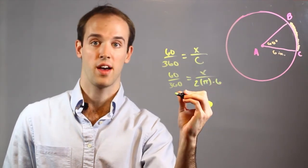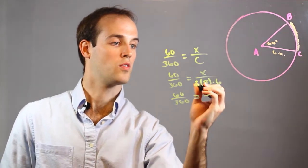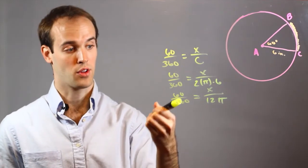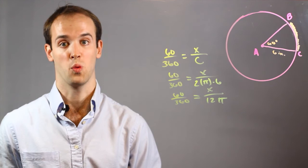And then I would simplify that further. 60 over 360 is equal to x over 12 pi. And I can simplify this further, because I know 60 over 360 would abbreviate to 1 over 6.